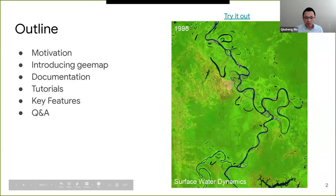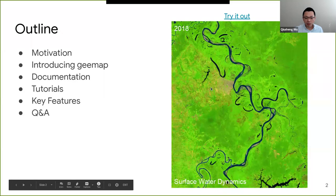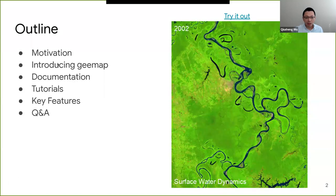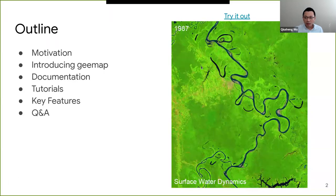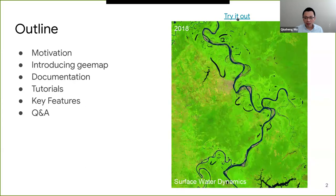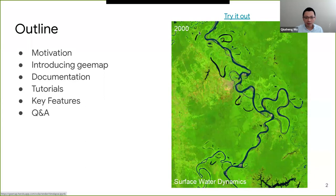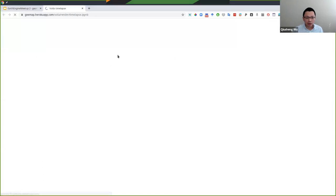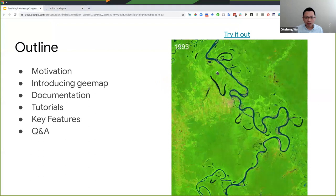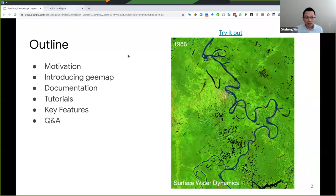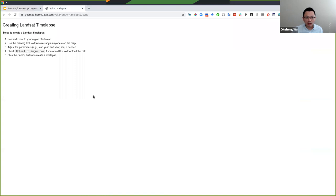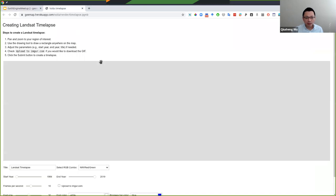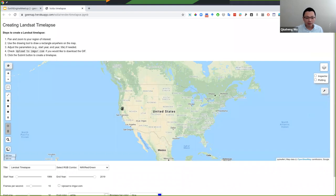So if you look at the animation on the right here, this is the one that I created using GMAT. You don't need any source code. If you like, you can click the link to try it out. Basically, this is a Jupyter notebook and you can turn a Jupyter notebook into a website. If you want to create any animation, for example, using Landsat data for the past few decades from 1984 up to right now, you're more than welcome to.